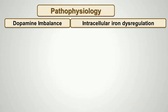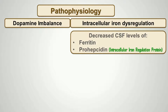There is no clear cause for RLS. The two most common pathophysiological mechanisms attributed are: 1. Dysregulation of dopamine transmission. 2. Intracellular iron dysregulation. This can be objectively substantiated by decreased CSF ferritin levels and decreased prohepcidin levels, which is an intracellular regulatory protein for iron metabolism.